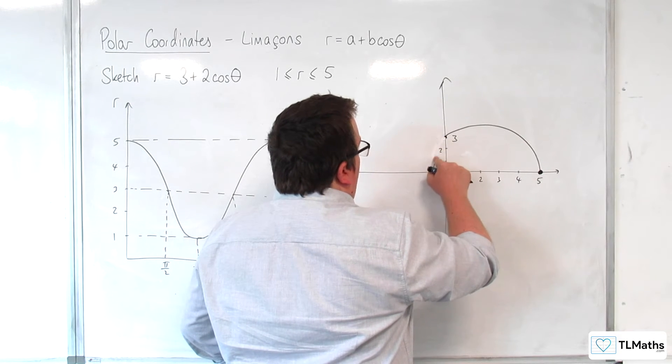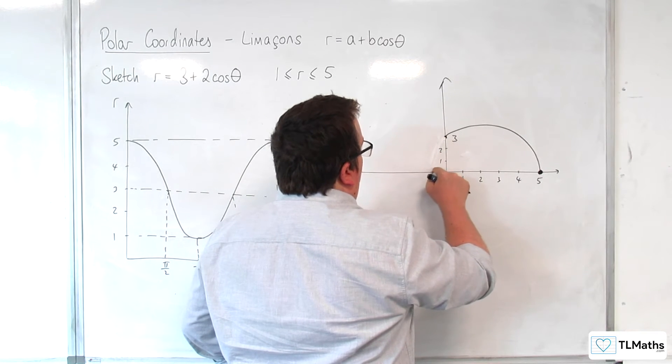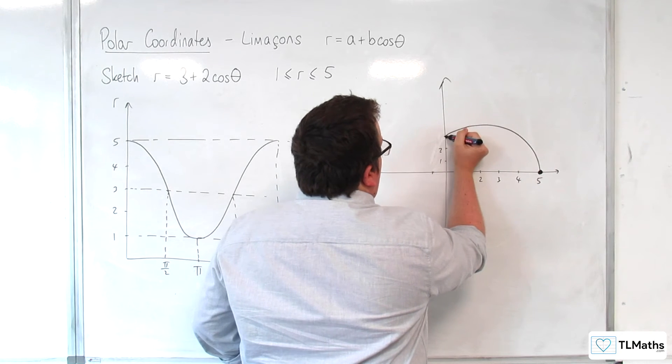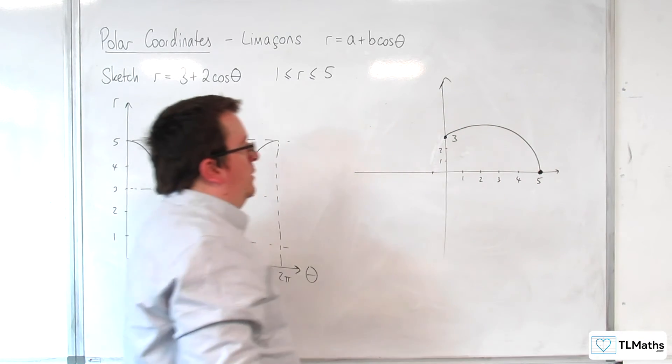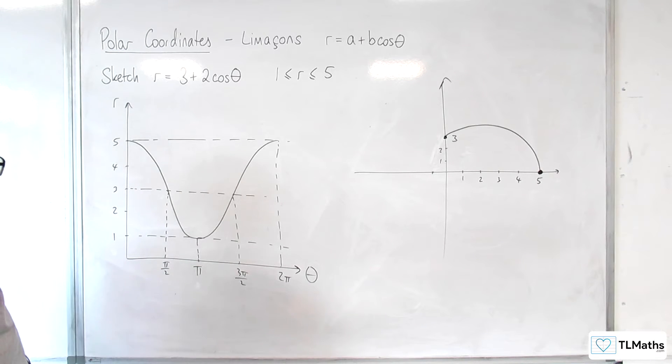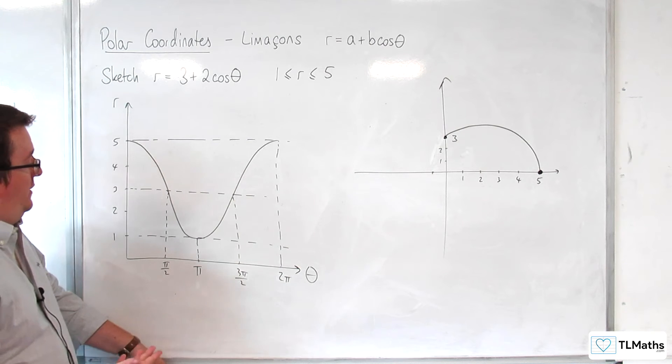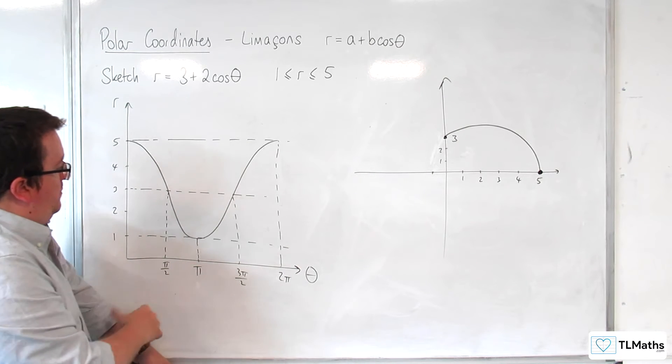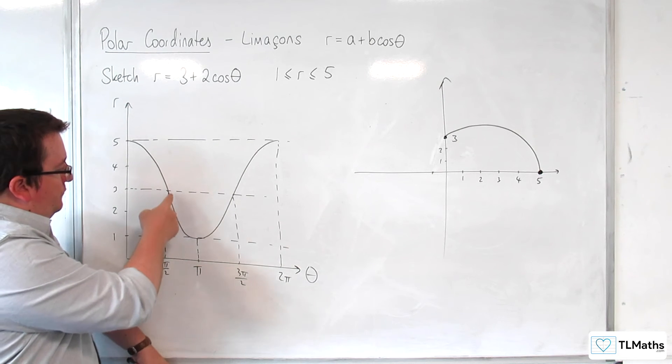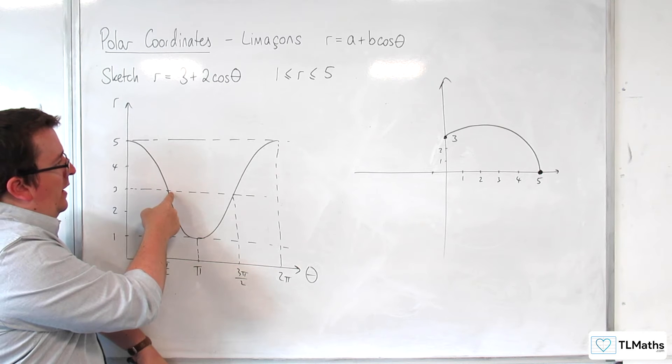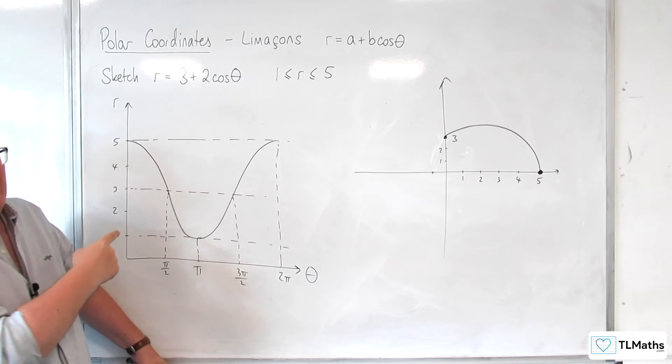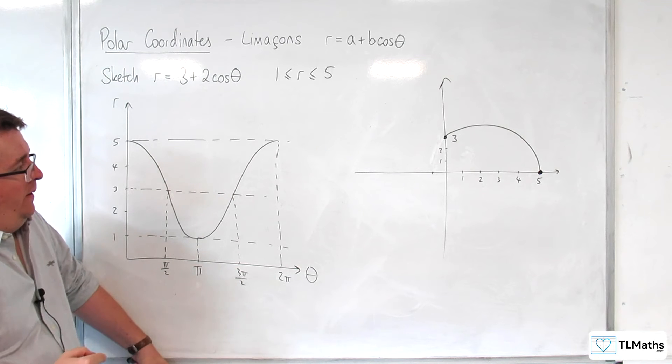Now, it's not immediately obvious as to why the curve would look the way that it does. You can kind of think of it as, well, as theta is increasing from pi over 2 to pi, it is quite quickly decreasing, then it's slowing down as it gets to pi.